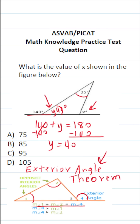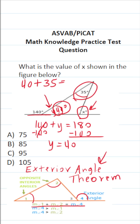Now we can actually apply the exterior angle theorem. This angle, which is 40 degrees, plus this angle, which is 35 degrees, is going to equal the measure of angle x. 40 plus 35 is 75, so 75 equals x — in other words, x is 75 degrees. So this one is A.